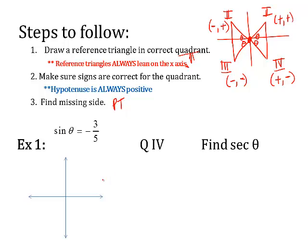Let's try one. It says the sine of theta is negative three over five, and it's in quadrant four, and my goal is to find the secant of theta. First thing, I need to draw a reference triangle in the right quadrant. It's in quadrant four, so my triangle is going to be down here. Theta is at the origin. Then I'm going to label my sides. Sine, because of SOH-CAH-TOA, is the opposite over the hypotenuse. So the opposite side of theta is three, and the hypotenuse is five. Now, one thing you've got to remember is there's a negative sign attached to this one.